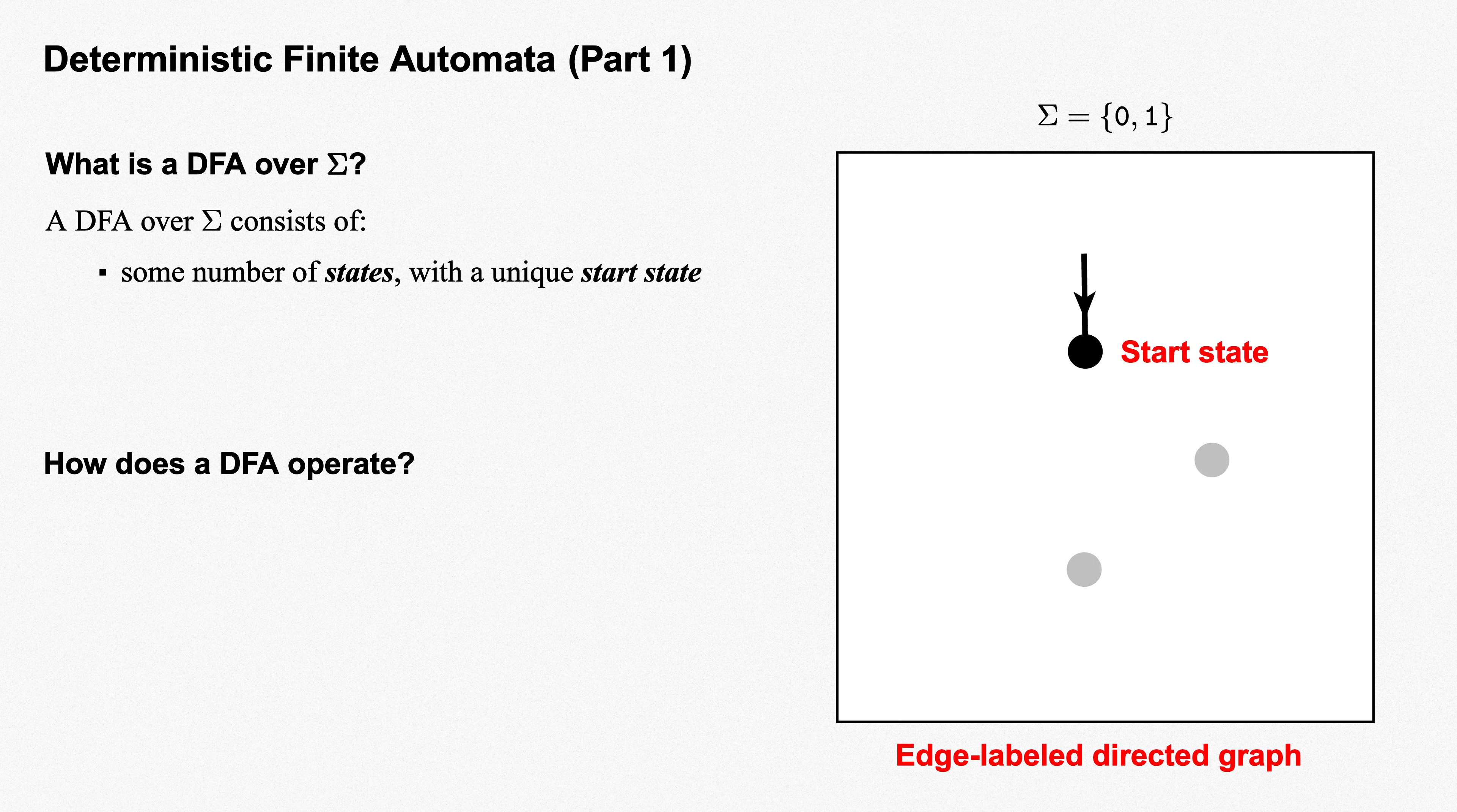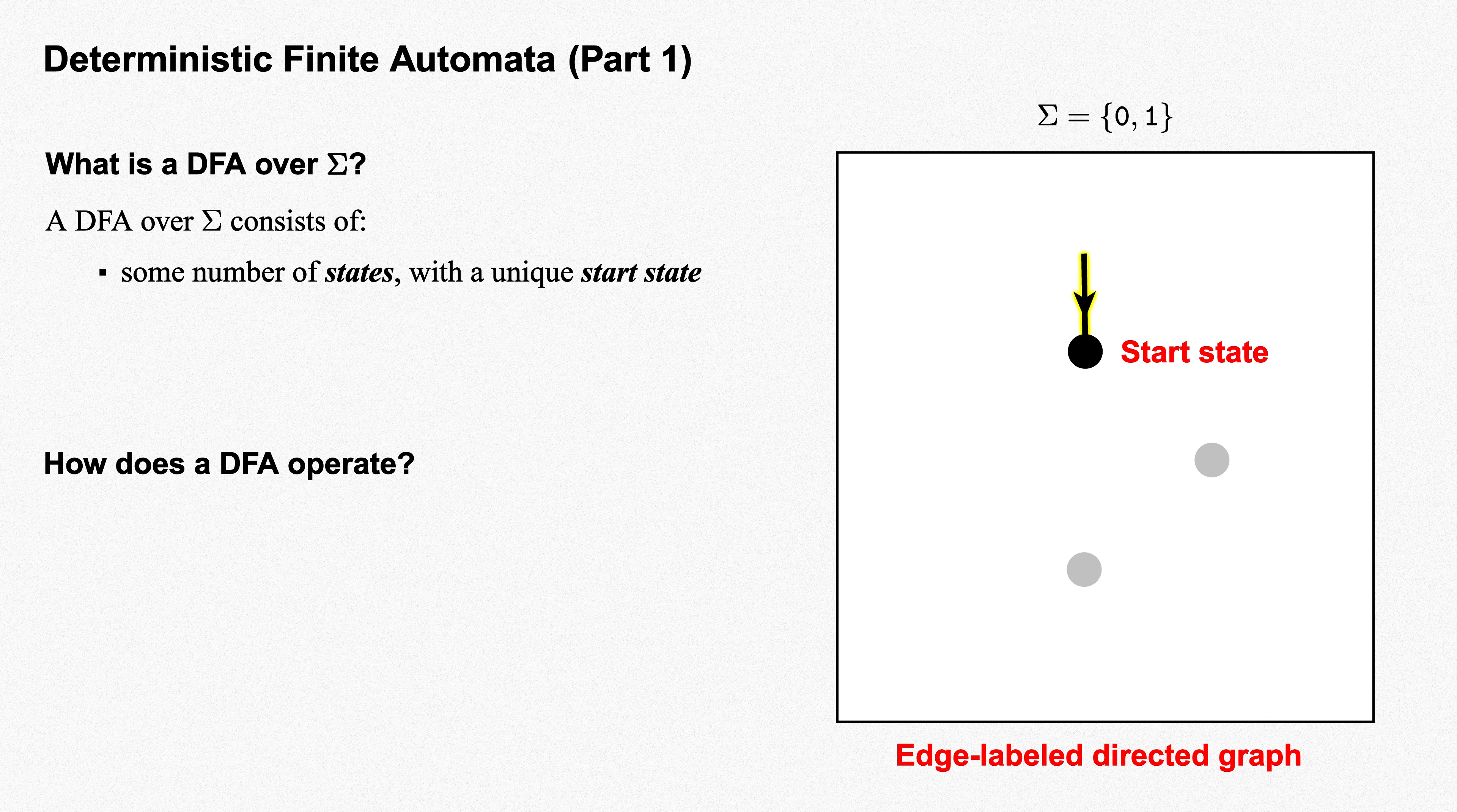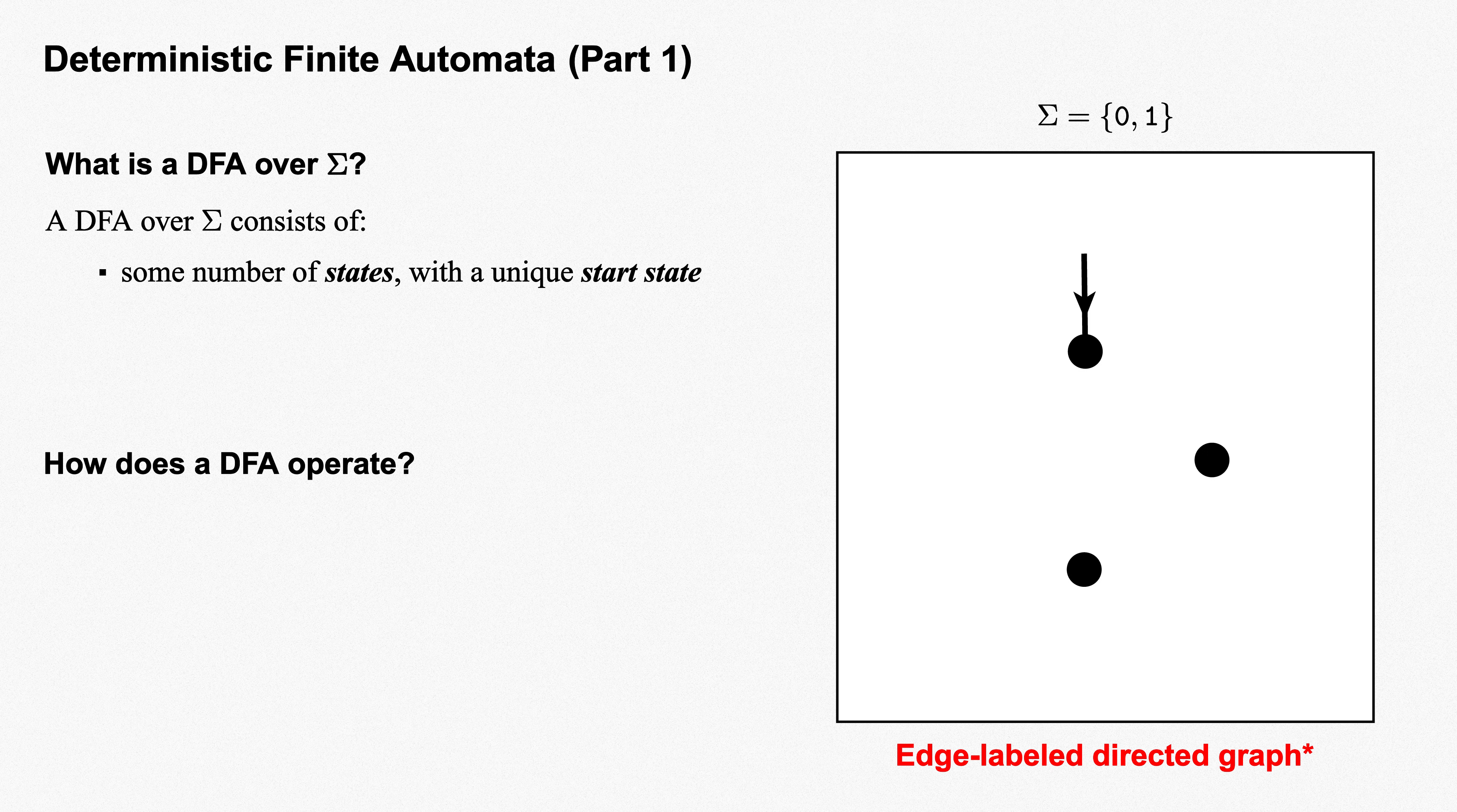Among these states must be a unique start state, which we indicate with an arrow or loose unlabeled edge coming into it. This loose edge is the only part of our diagram that keeps it from being an actual graph. Our example DFA has three states, but any positive number of states is possible. We sometimes label the states of a DFA in order to refer to them or to record them in a table. But those state labels have no significance whatsoever in the operation of the DFA. They just help us to refer to the states or describe the roles those states play.